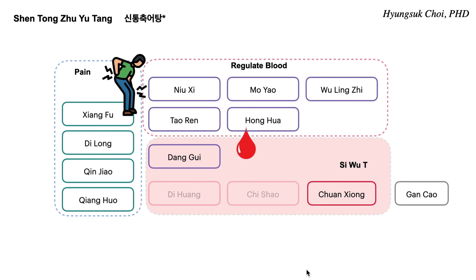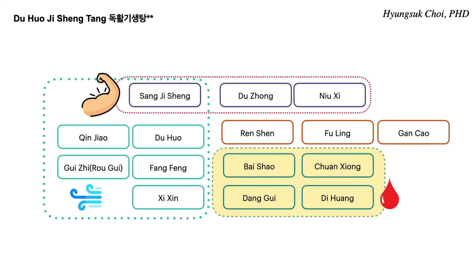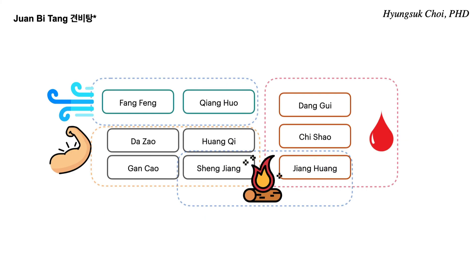We have learned many different formulas for pain. Shen Tong Zhu Yu Tang is mostly for blood stasis. Qing Huo Sheng Shi Tang is for dampness. Another formula is for wind and kidney deficiency, and San Ji Sheng Tang treats wind, tonifies the kidney, and strengthens sinew and bone. Juan Bi Tang tonifies qi and removes blood stasis and releases wind.